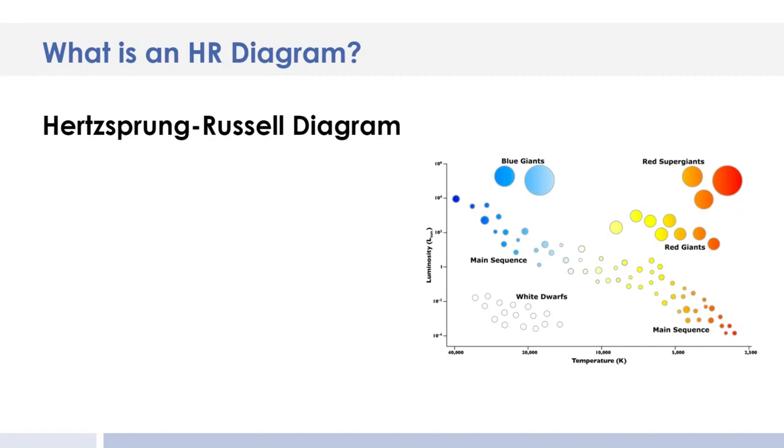HR stands for Hertzsprung Russell Diagram, and it's named after the two scientists that created it. One is Ejnar Hertzsprung, who's Danish, and the other is Henry Norris Russell, who's American. They came together to create this diagram.